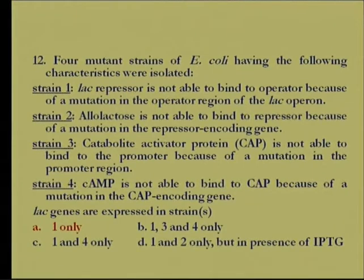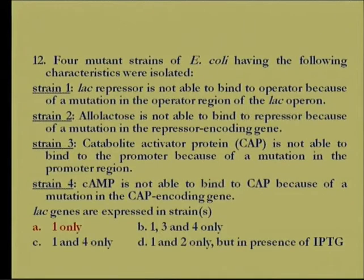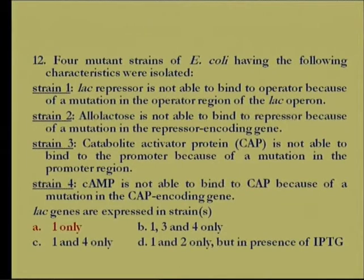Another question: four mutant strains of E. coli were isolated. Strain 1: lac repressor is not able to bind to the operator due to a mutation in the operator region. Strain 2: allo-lactose is not able to bind to the repressor due to a mutation in the repressor-encoding gene. Strain 3: catabolite activator protein is not able to bind to the promoter due to a mutation in the promoter region. Strain 4: cyclic AMP is not able to bind to catabolite activator protein due to a mutation in the CAP-encoding gene.